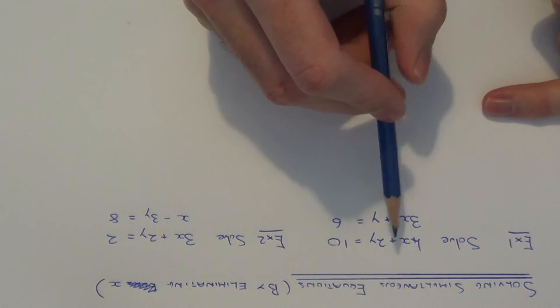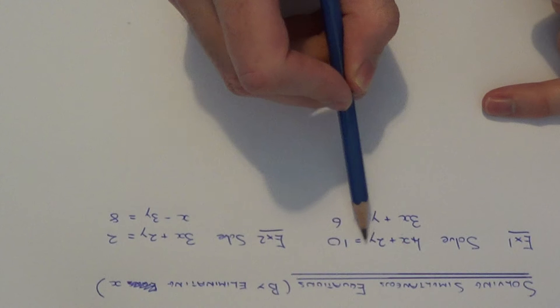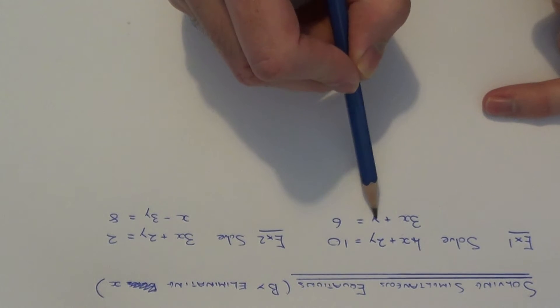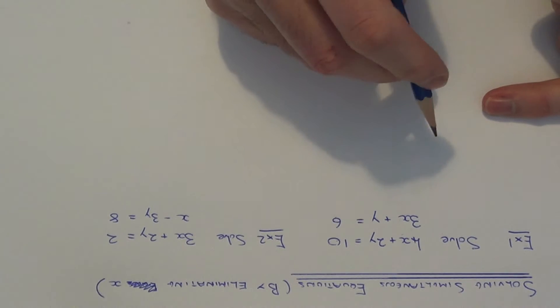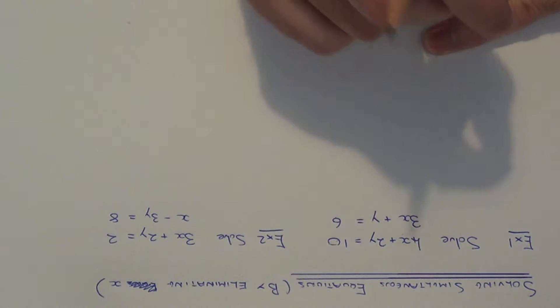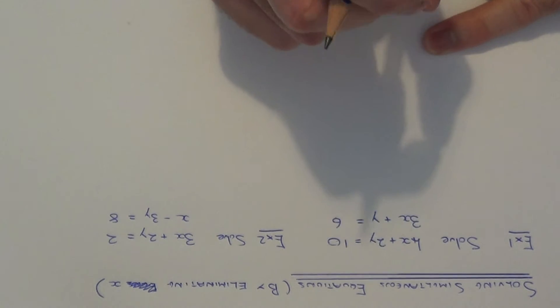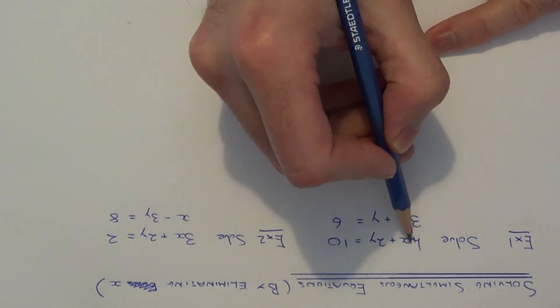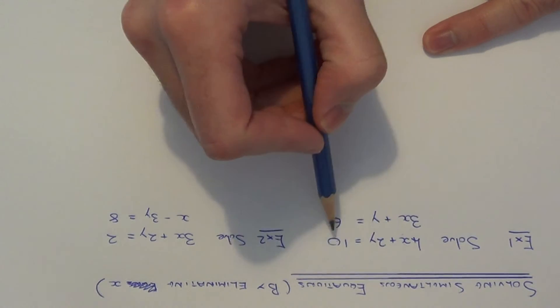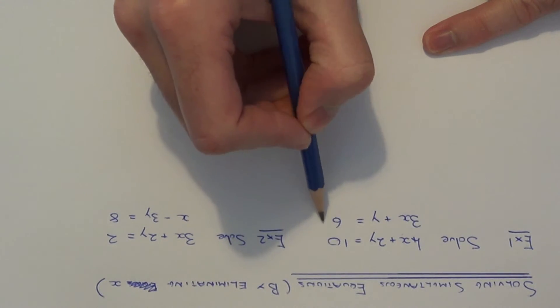So in the first example here, we're looking for a value for x and y which gives us 10 in the first equation, and a value for x and y which also gives us 6 in the second equation. First step then, you need to make the values before x the same. You can do this by multiplying the two equations which you already have.